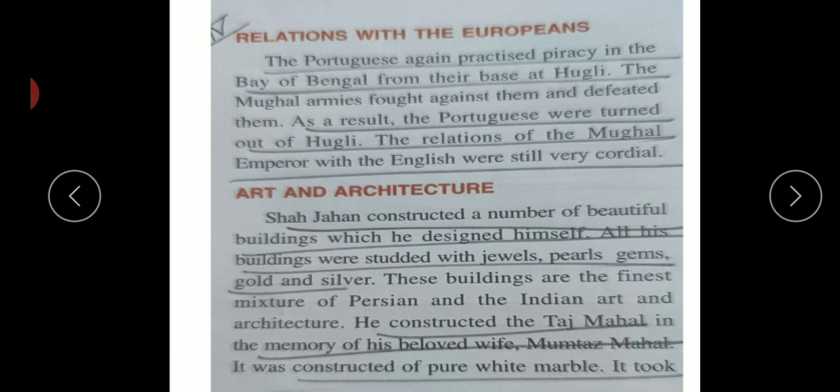The Mughals should have coordination or cordial relations with the English people - so that Mughals could deal with the English. Regarding art and architecture, Shah Jahan built very beautiful buildings; he himself had them constructed.